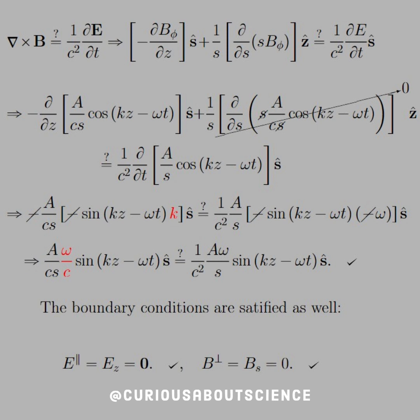Once we plug everything in, we see that D by B phi over DZ. We can actually evaluate that derivative. The other one, once we substitute it in, we see that the S's cancel. And, there's nothing to take the derivative of with respect to S. So, the Z component of the curl goes to 0.